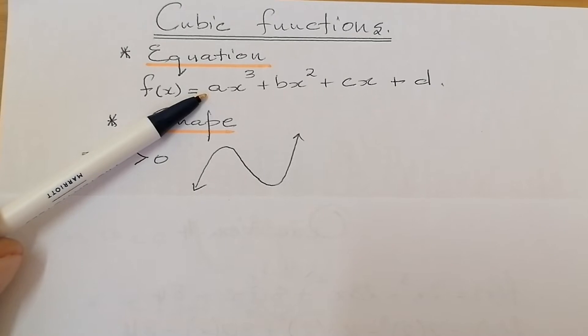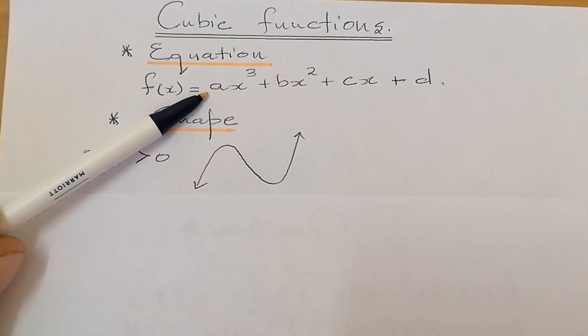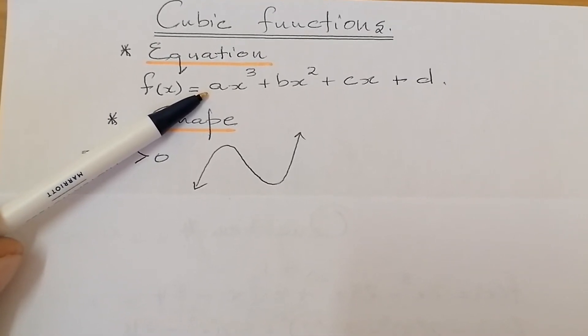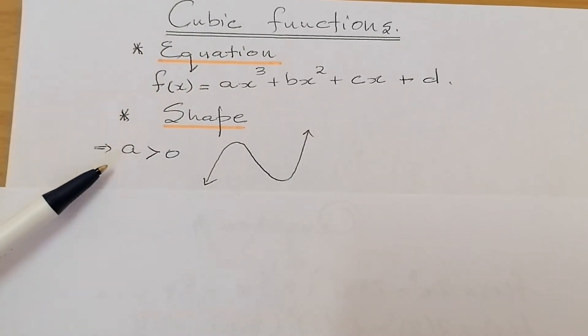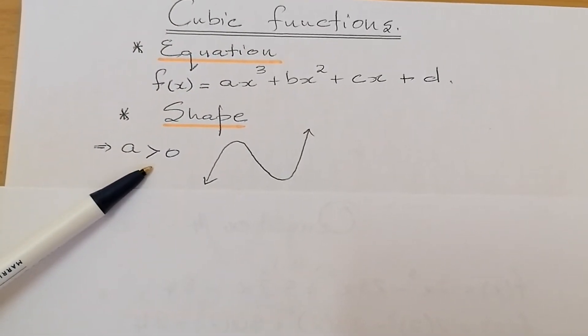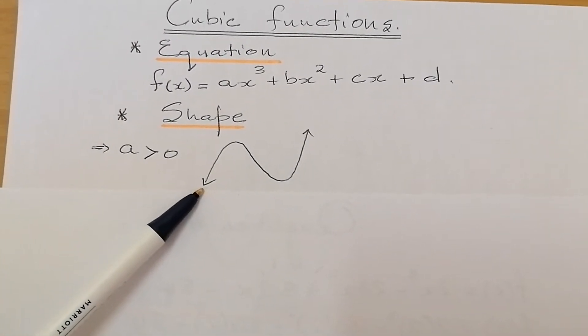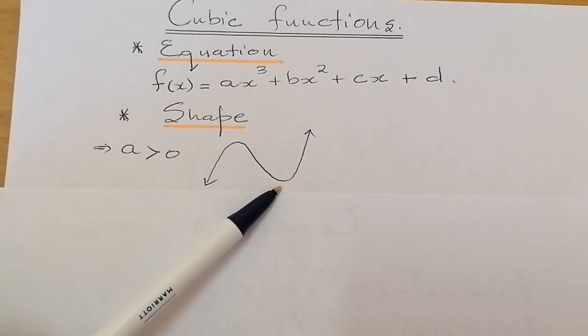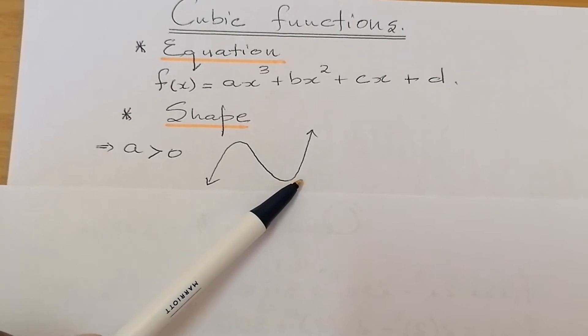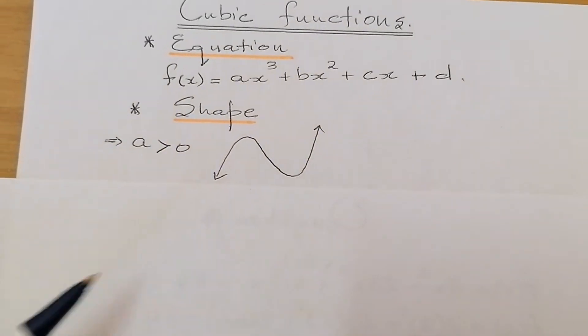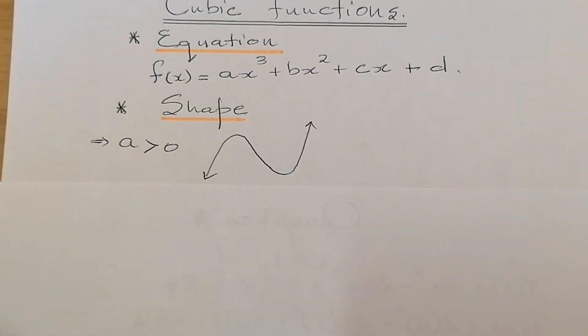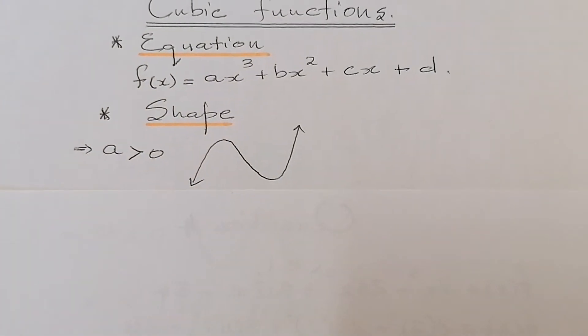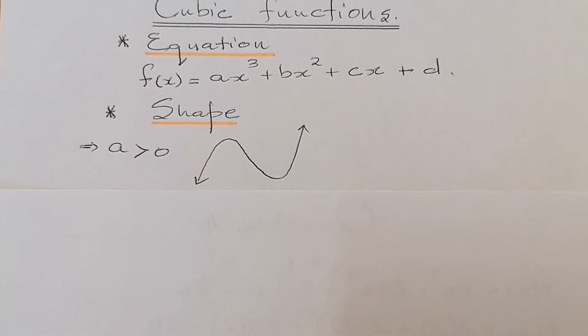parameter a will tell you the shape that the graph will take. When a is positive, your graph will start from there, go to maximum, then decrease again to minimum, and go up again.